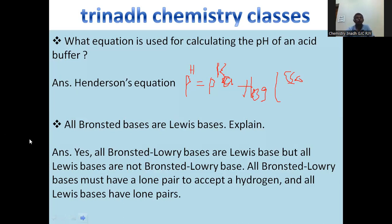All Bronsted bases are Lewis bases - explain. Bronsted bases are proton acceptors, whereas electron pair donors are Lewis bases. All Bronsted bases are Lewis bases, but all Lewis bases are not Bronsted bases. The reason is all Bronsted bases must have a lone pair to accept a hydrogen. That's why all Bronsted bases are Lewis bases, and all Lewis bases have lone pairs.